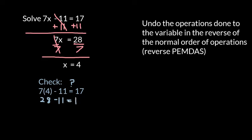Therefore, my answer of x equals 4 is true, and I have correctly solved my original equation up here. This is an example of solving a two-step equation. Thank you.